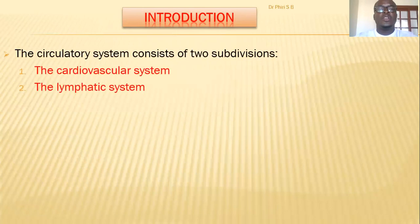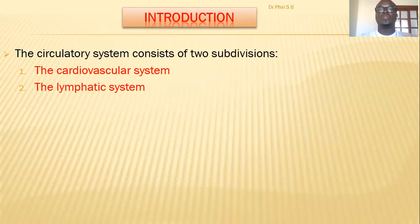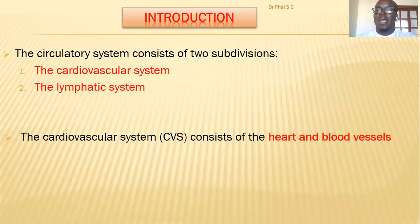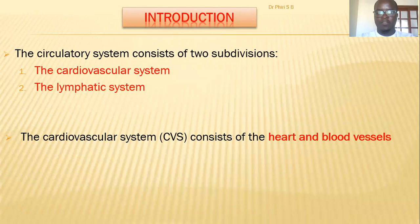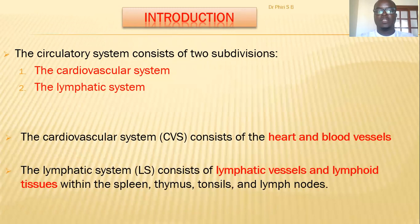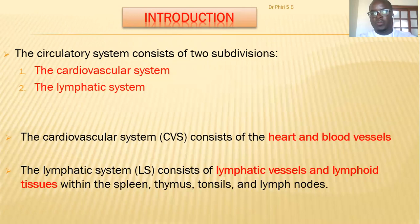The circulatory system consists of two subdivisions: the cardiovascular system, which is composed of the heart and the blood vessels, and the lymphatic system. The cardiovascular system consists of the heart (cardia) and the blood vessels — that's why it's called the cardiovascular system. The lymphatic system consists of lymphatic vessels, lymphoid tissue within the spleen, the thymus, tonsils, and lymph nodes.